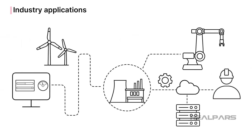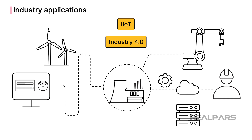OPC UA is a vital component of the 4th Industrial Revolution, or Industry 4.0. The Industrial Internet of Things, known as IIoT, is all about access to data and making data available to those users that require it. This is exactly what the OPC UA Data Subscription feature is all about.